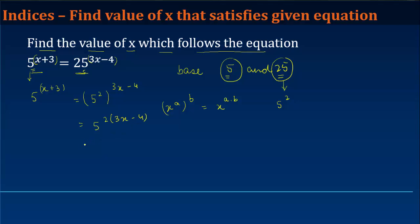Now since the base is common in both the left hand side and the right hand side, what I get is that x plus 3 is equal to 2 times 3x minus 4. Now solving this, you get x plus 3 is equal to 6x minus 8.